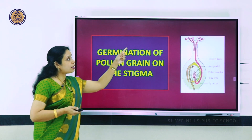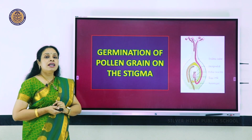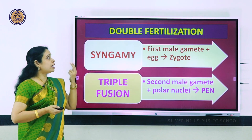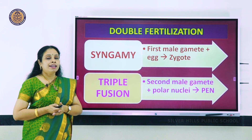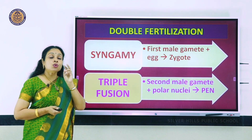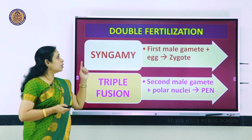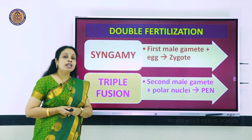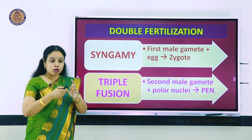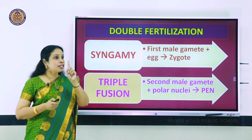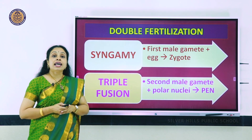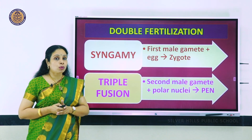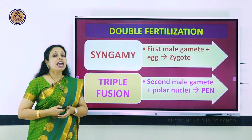Once pollen grains have reached the stigma, pollen germination occurs. The pollen tube enters the ovary where double fertilization will happen - that is why the pollen had two male gametes. The two major events of double fertilization are syngamy and triple fusion. In syngamy, the first male gamete fuses with the egg near the micropyle, forming a diploid zygote (2n), which will later develop into the embryo.